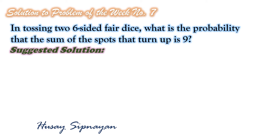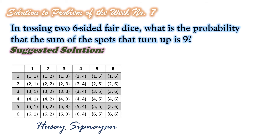Here is our suggested solution. When two dice are thrown simultaneously, the number of events can be 6 squared, or 36, because each die has 1 to 6 number of spots on its faces. The possible outcomes are shown in the following table.